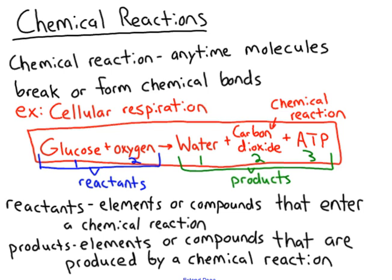Before we start talking about enzymes, we need to understand what a chemical reaction is. Number one: chemical reactions are anytime molecules break or form chemical bonds. Chemical reactions are happening inside of you all the time. An example of a chemical reaction would be cellular respiration — how you take glucose and make it into cellular energy that we call ATP.